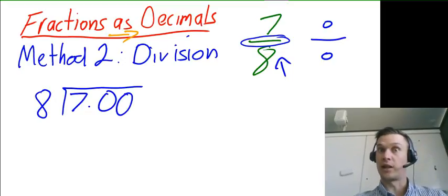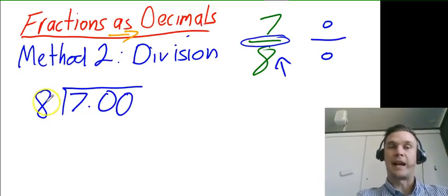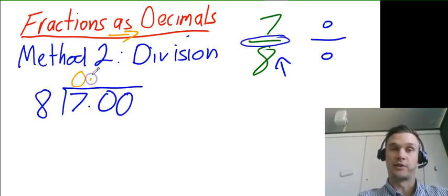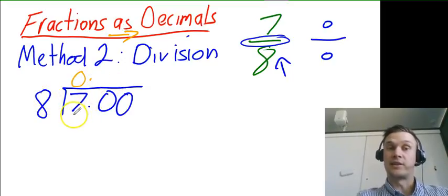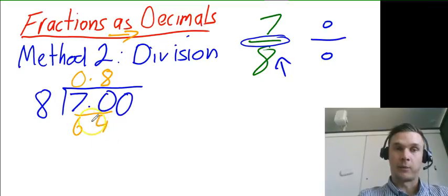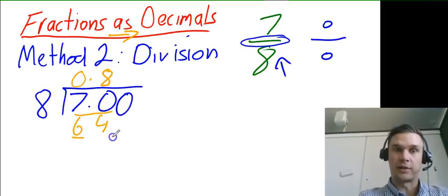So if I do this one here as an example so you can understand: 8 goes into 7 zero times, it doesn't, so carry up the decimal. 8 goes into 70, that goes 8 times, which gives us 64. And we have 6 left over, so the 6 goes down, the zero drops, so now we have 60.